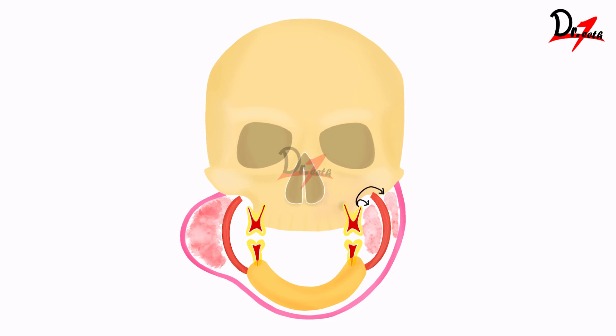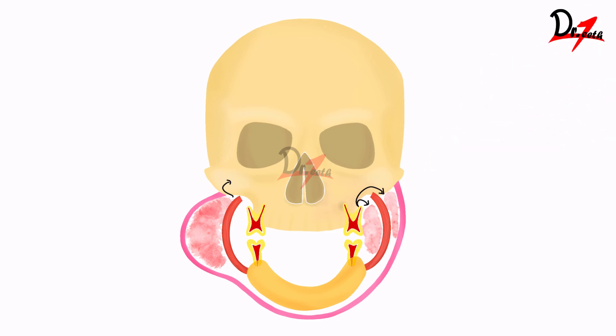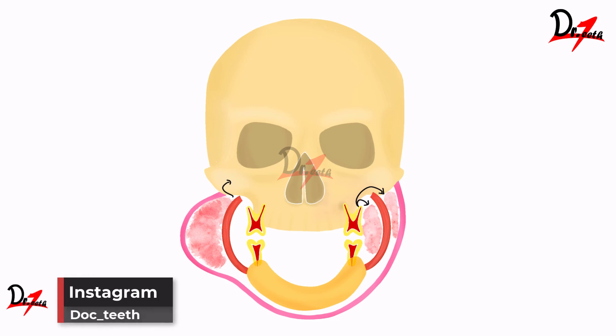Now this infection can extend upward and involve the temporal space, and also inferiorly it can involve the pterygo-mandibular space. When we have infection in the infratemporal space, it is a serious condition because we have the pterygoid plexus of veins there. Via the pterygoid plexus of veins, the infection might go into the cavernous sinus, which could be really serious for the patient. So remember that the infection can spread to the infratemporal space as well.